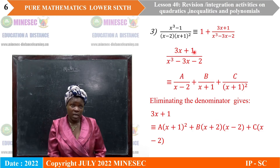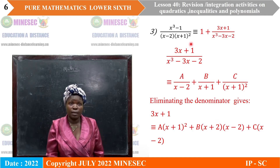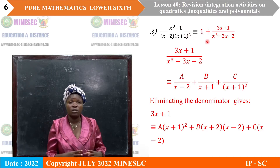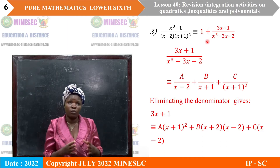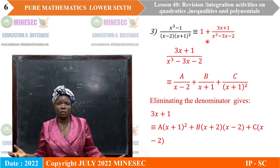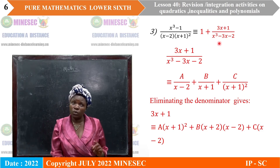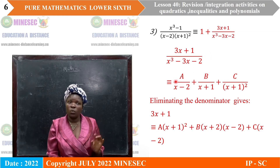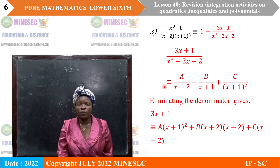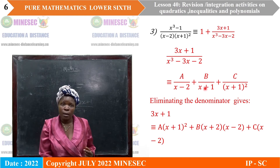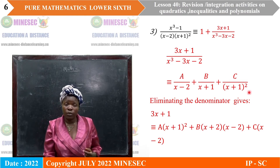Question 3 is the same — the degree of the numerator equals that of the denominator. We divide by long division to put it in canonical form as 1 plus 3x plus 1 divided by x cubed minus 3x minus 2. Note that 3x plus 1 over x cubed minus 3x minus 2 is now a proper fraction, and we decompose it as: identically equal to a over x minus 2, plus b over x plus 1, plus c over x plus 1, all that squared.